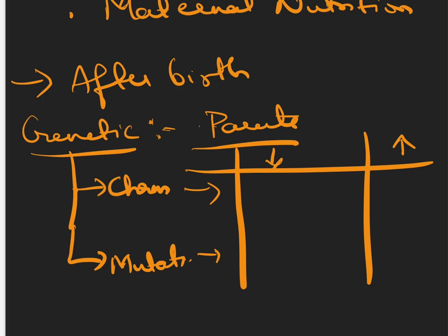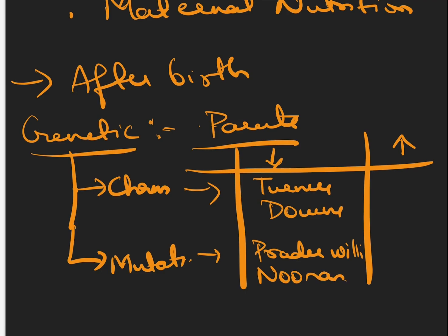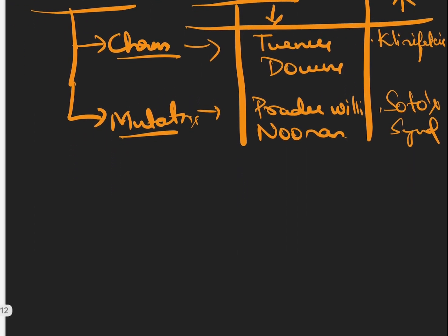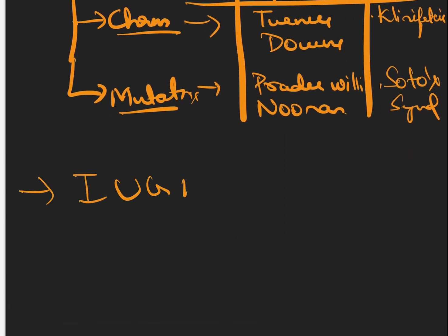Chromosomal abnormalities that decrease growth include Prader-Willi syndrome and Noonan syndrome. Not all chromosomal abnormalities decrease growth — some can increase growth, like Klinefelter syndrome. In mutations, Sotos syndrome is an example. If the child has IUGR (intrauterine growth restriction), after birth the child will have EUGR (extra-uterine growth restriction).